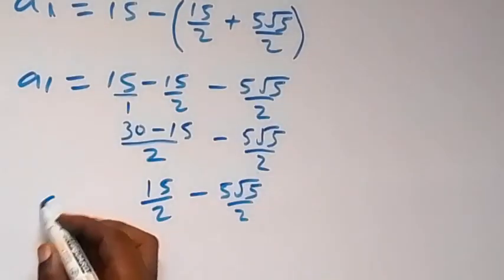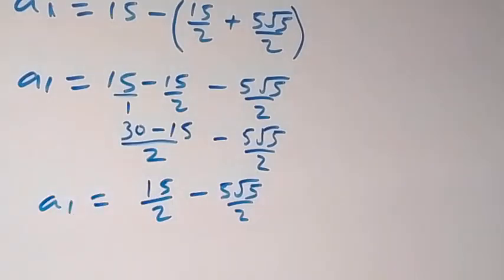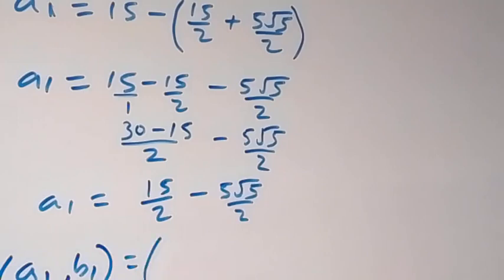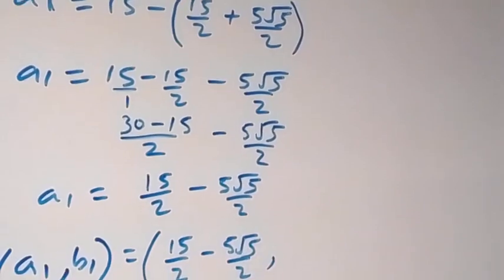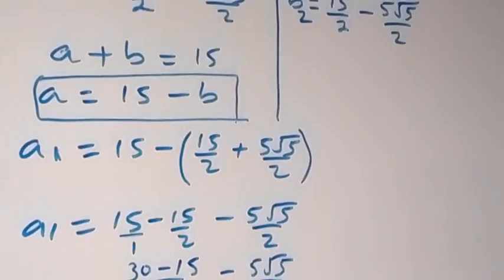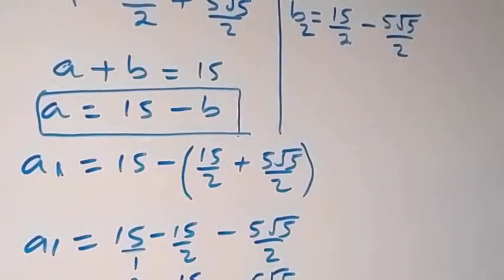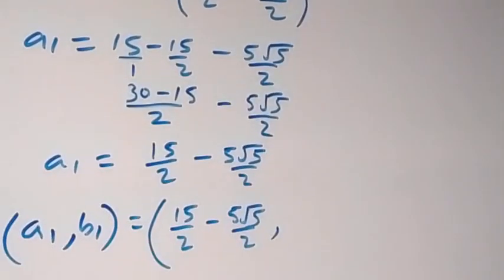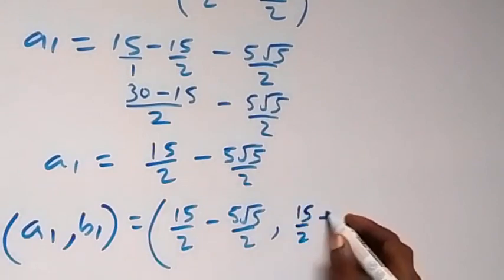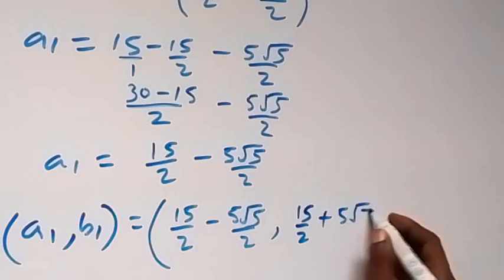So the first solution pair, (A1, B1), gives us A1 equals 15 over 2 minus 5 root 5 over 2, and B1 equals 15 over 2 plus 5 root 5 over 2.